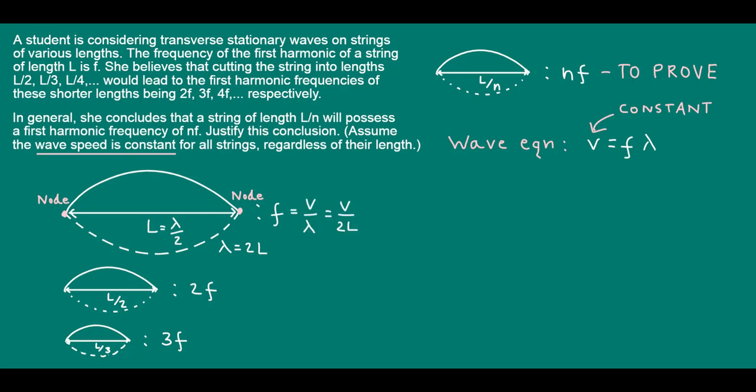Notice that we now have a relationship between frequency and length of string. The two quantities are inversely proportional to each other, which is the key to justifying the student's claim. For example, halving the length of string, which means replacing L with L over 2, leads to twice the original expression, i.e. 2 times the original frequency, 2f, just as the student thought.